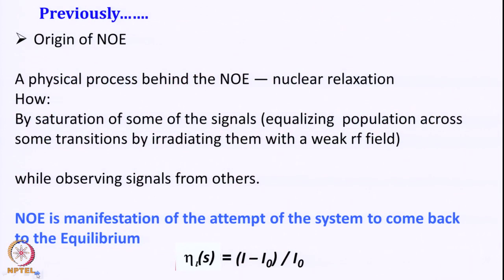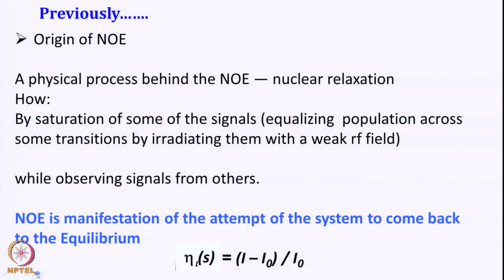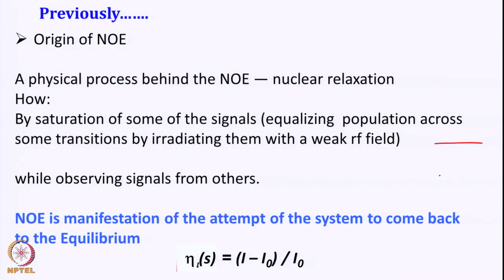Previously we looked at the origin of NOE and the physical principle behind it, which is nuclear relaxation. We have two signals which are somehow coupled through space and we saturate one signal. By saturation, we mean we equalize the population across the transition by irradiating with a weak RF field, equalizing the population between those two states. While observing what is happening to the other signal — that is what is NOE.